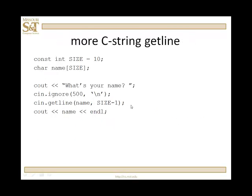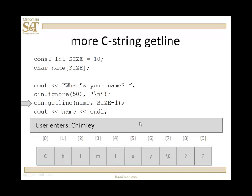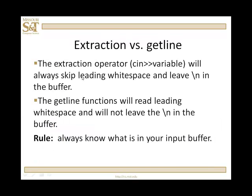We have 'name' of size 10, we prompt for a name, and when we hit the 'ignore' line — ignore is also a member function of the class to which cin belongs. What this does is clear the input buffer: it reads up to 500 characters or until it hits the first newline character, throwing everything away. The idea is it clears everything out of the input buffer so your getline will work. If a cin extraction statement left a newline out there, the ignore statement gets rid of it, and then your getline will work. It'll output 'Jim'.